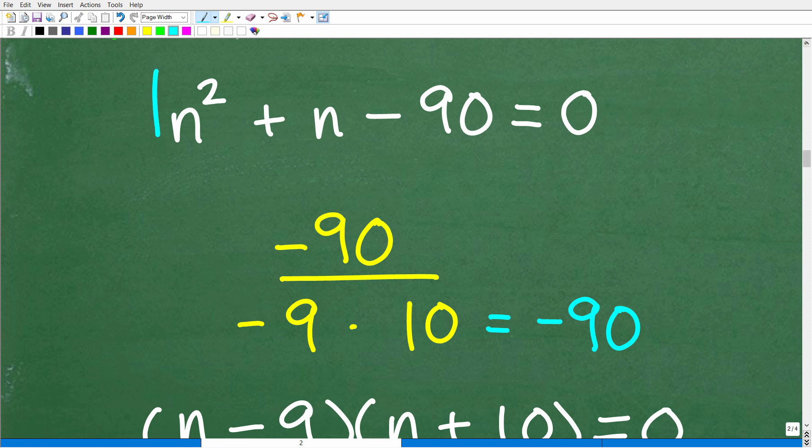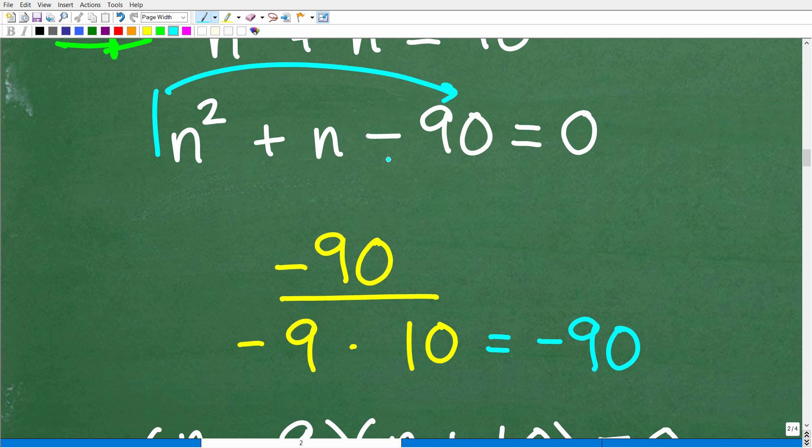So what we can do is take that one, multiply it by this last number here. This is in standard form, which is highest to lowest power. So one times negative 90 is negative 90. We're looking for factors. We hope that we have factors of negative 90 that add up to this one right here. Here is negative 9 times 10. These are factors of negative 90. There are other factors as well, but I'm not listing them all.